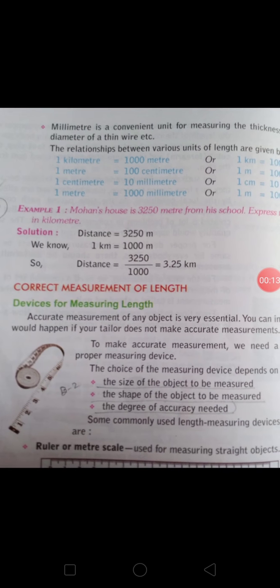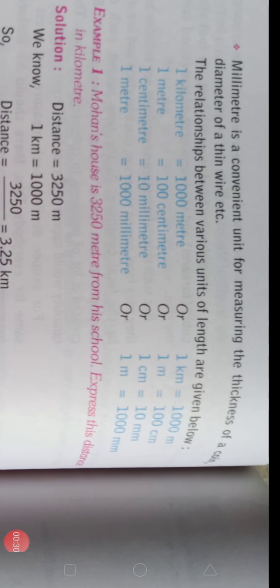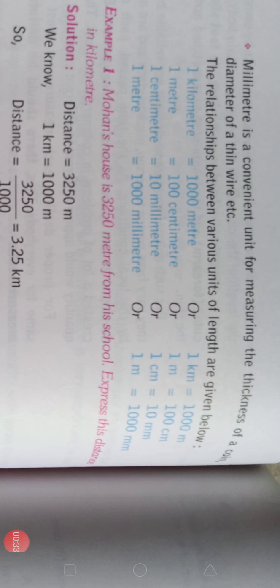Hello students, today I am going to start your chapter number 10, i.e. Measurement of Length and Distance. In this chapter, we have already discussed about the Unit of Measurement, i.e. the unit of measurement is Meter. There are some more units of measurement. Millimeter is a convenient unit for measuring the thickness of a coin and diameter of a thin wire, etc.